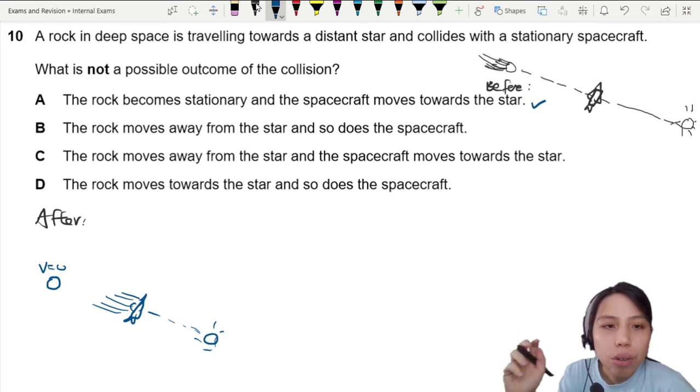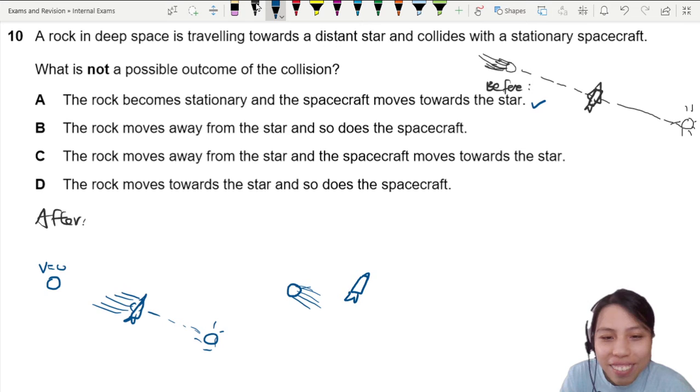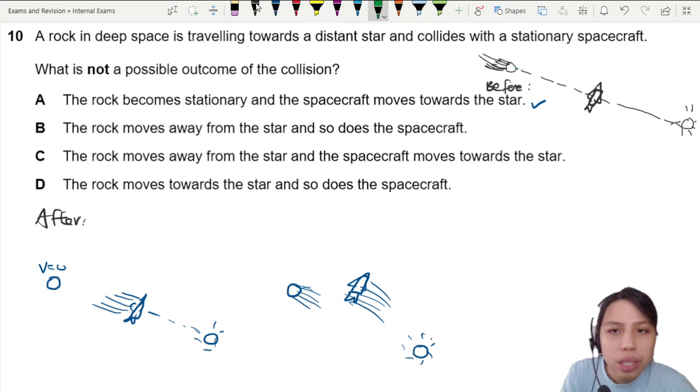B, the rock moves away from the star and so does the spacecraft. Wait what? So after collision, the rock is moving away from the sun, the spacecraft is also moving away from the sun. How is that possible? Your initial momentum or initial velocity is towards, see the top right there, towards the sun. Cannot suddenly out of nowhere you move away, both some more.